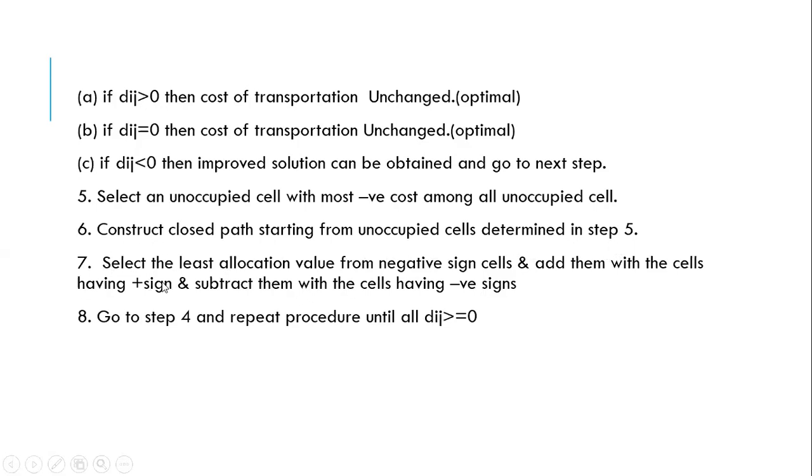Once we draw the loop, we have to alternatively assign the plus symbols and minus symbols for every corner of the loop. So once all those symbols are assigned we have to select the least allocation value from negative sign cells and add them with the cells having plus sign and subtract them with the cells having negative signs.